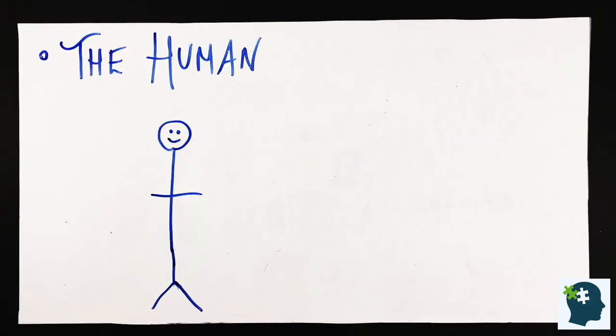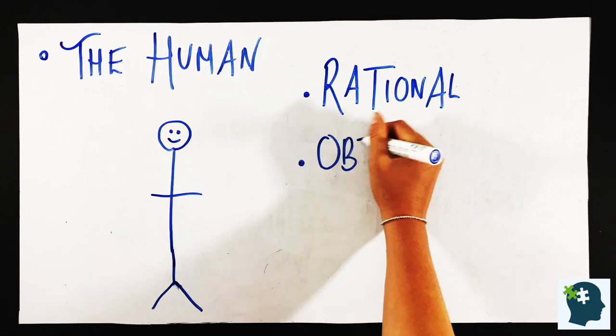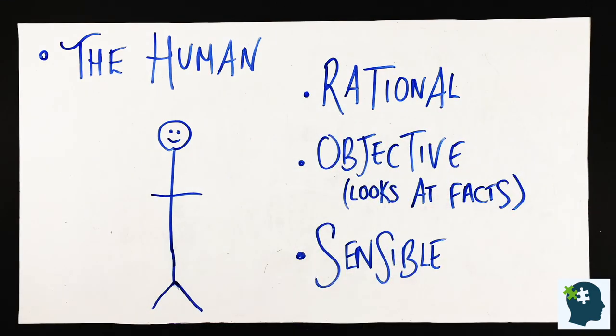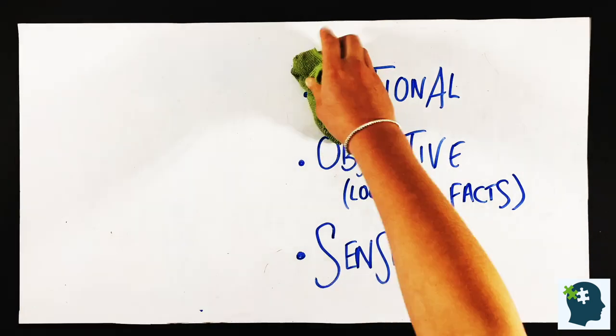The human is rational, objective, looking at the facts, and sensible, and this is the area of deep thinking, enabling us to work out puzzles, problems, and to think through tricky decisions, using facts and truths. It's the part of our brain that represents who you truly are, and what you believe to be right or wrong, and important in your life. You can probably start to see why the human and the chimp are sometimes in conflict.